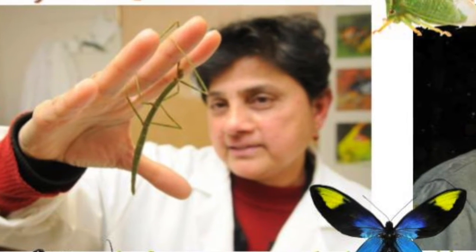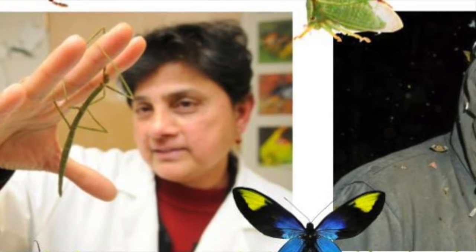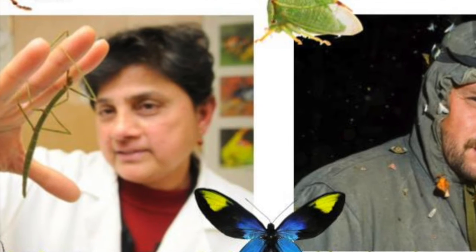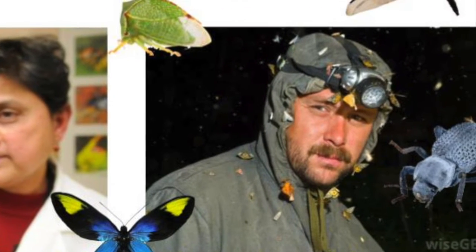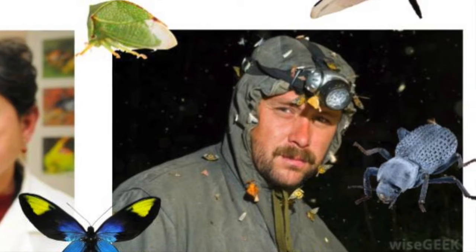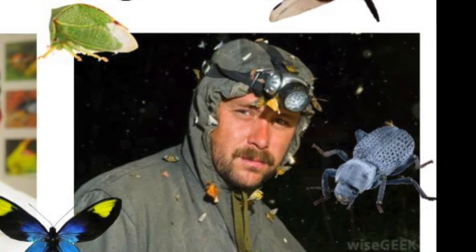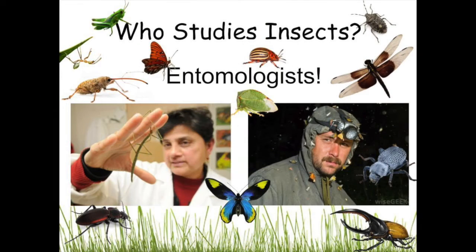All right friends, but before we go on a search for insects, I would like to review some important information first. The first thing we have to know about insects is who studies insects. The person who studies insects is called an entomologist. This person is in charge of looking for the different variety of insects, identifying them, and studying more about them.